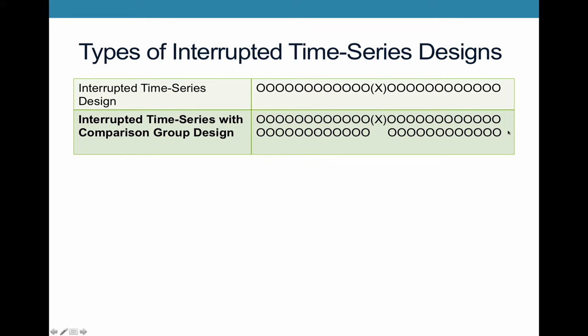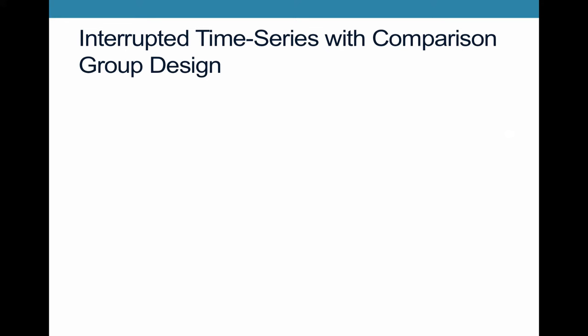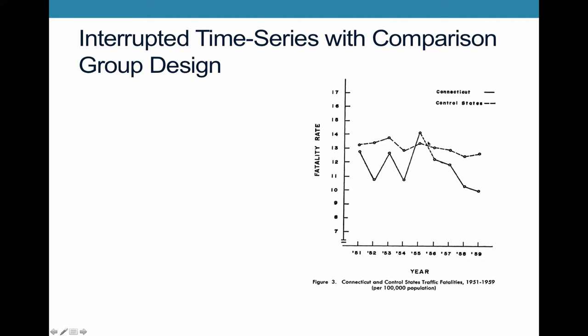So how does this interrupted time series design with a comparison group do on the internal validity threats? So here, let's look at and see what the data is. So this is Connecticut. And then here are a number of control states. So these researchers added various other states in there, including New York, including New Jersey, including Massachusetts, other New England states, to see if you see general patterns there and how those compare to what's going on in Connecticut. And they chose these control states because they're likely to have similar weather patterns, all being in the Northeast, and they're also likely to have some cultural similarities that might be beneficial.